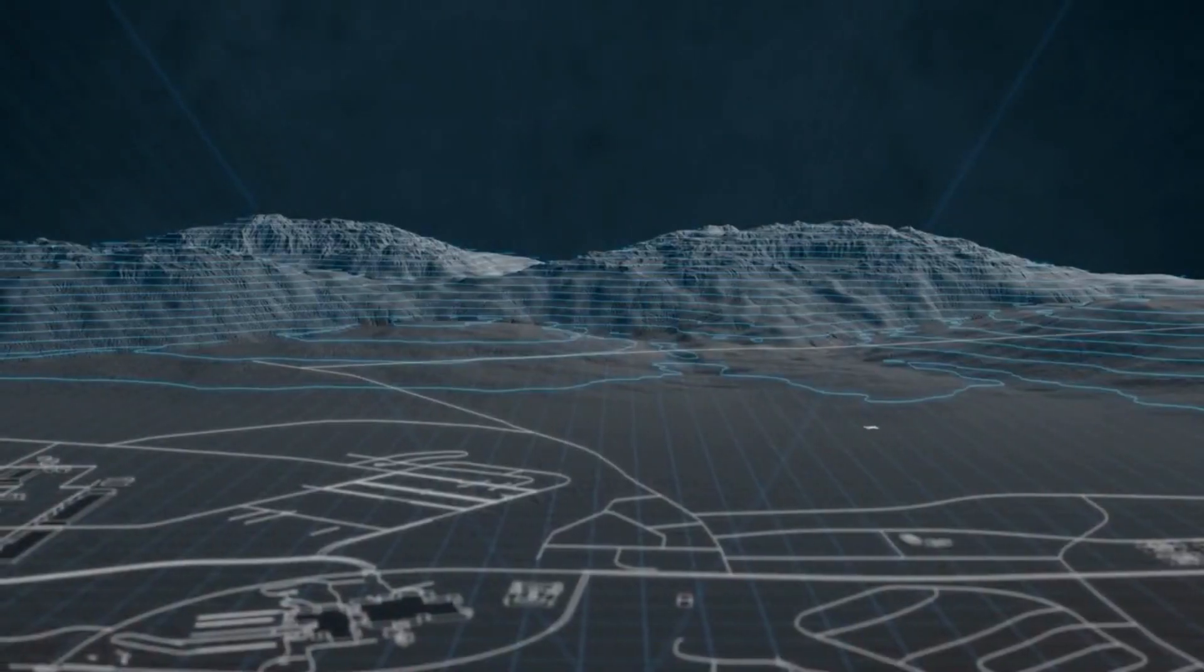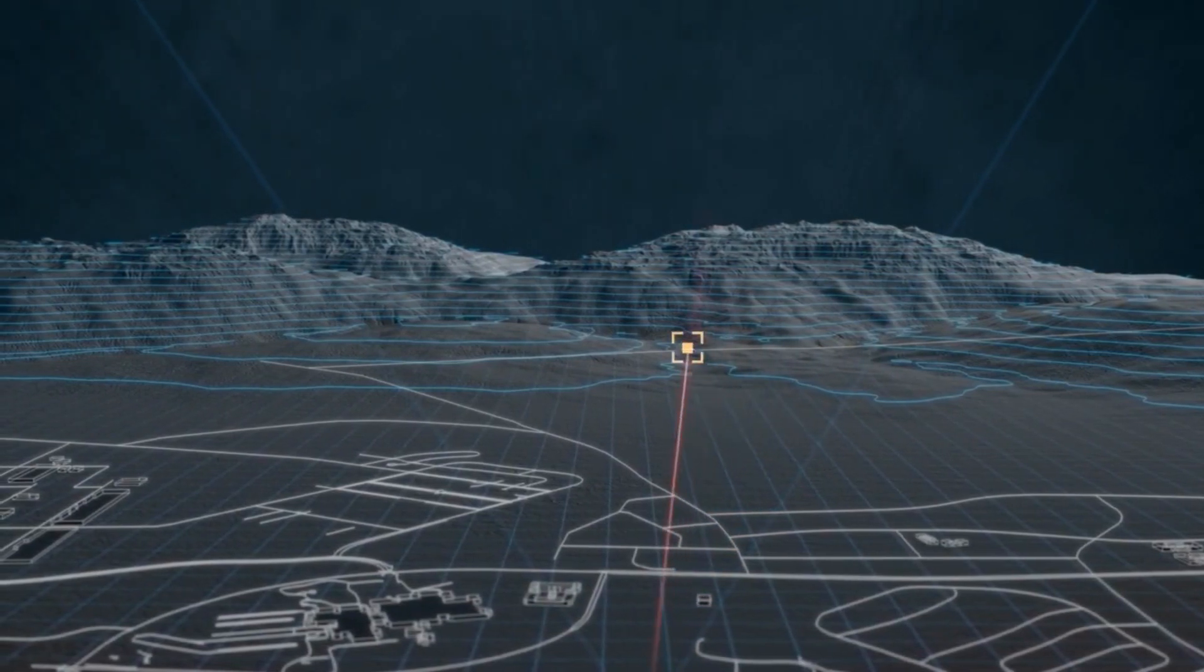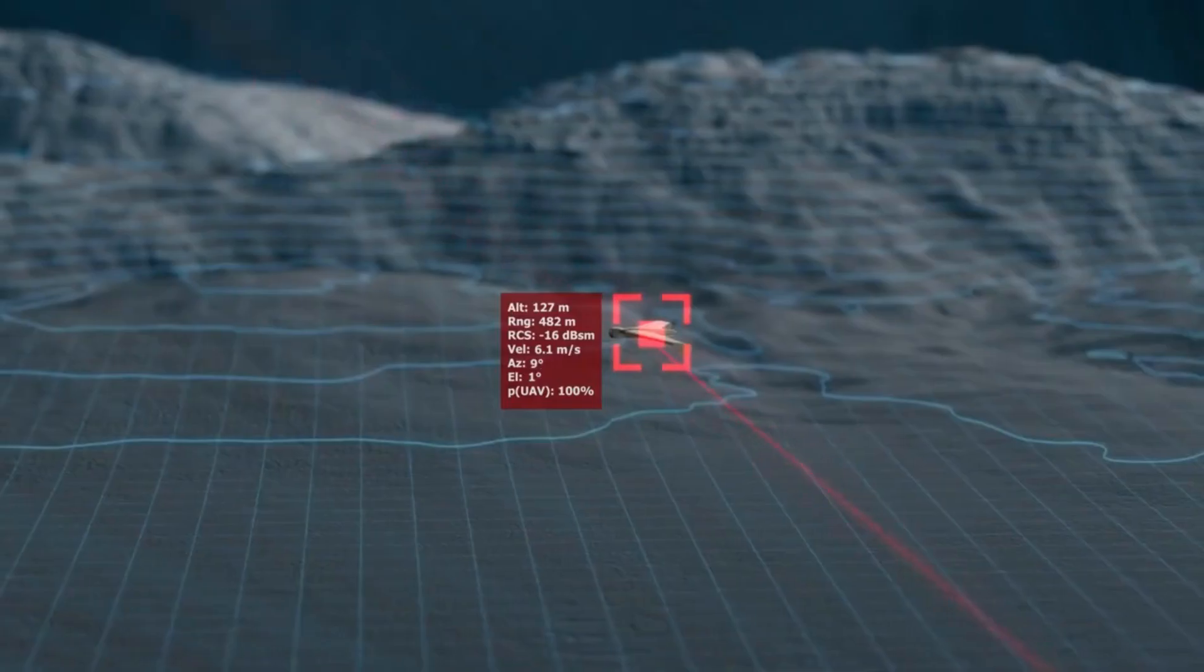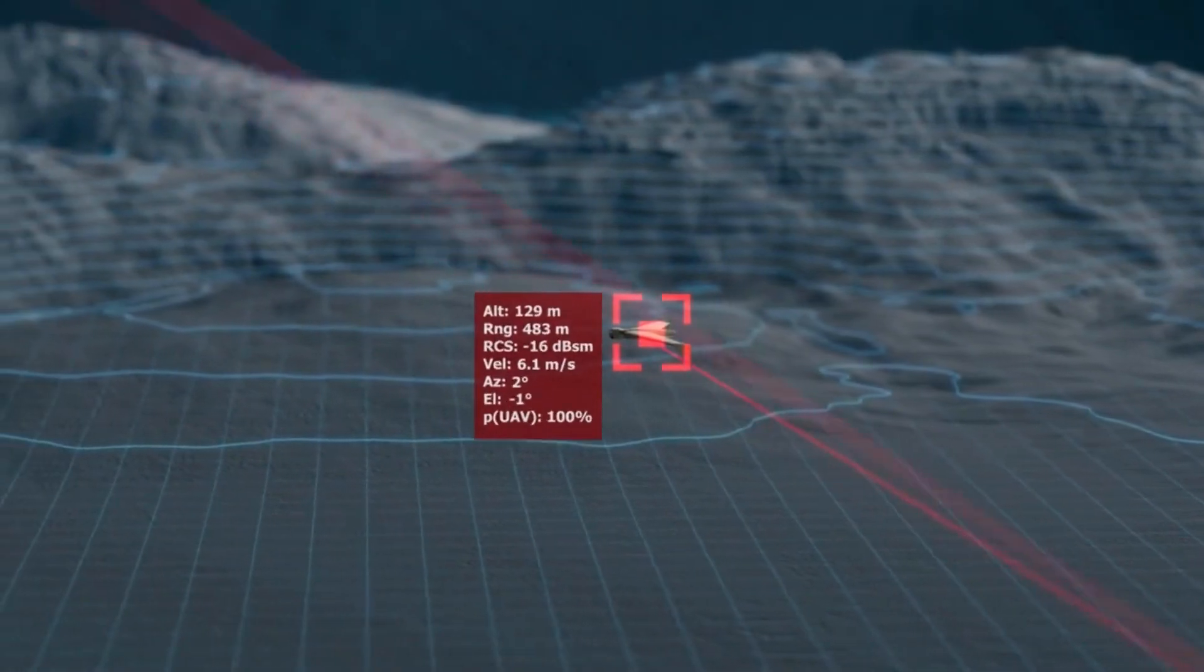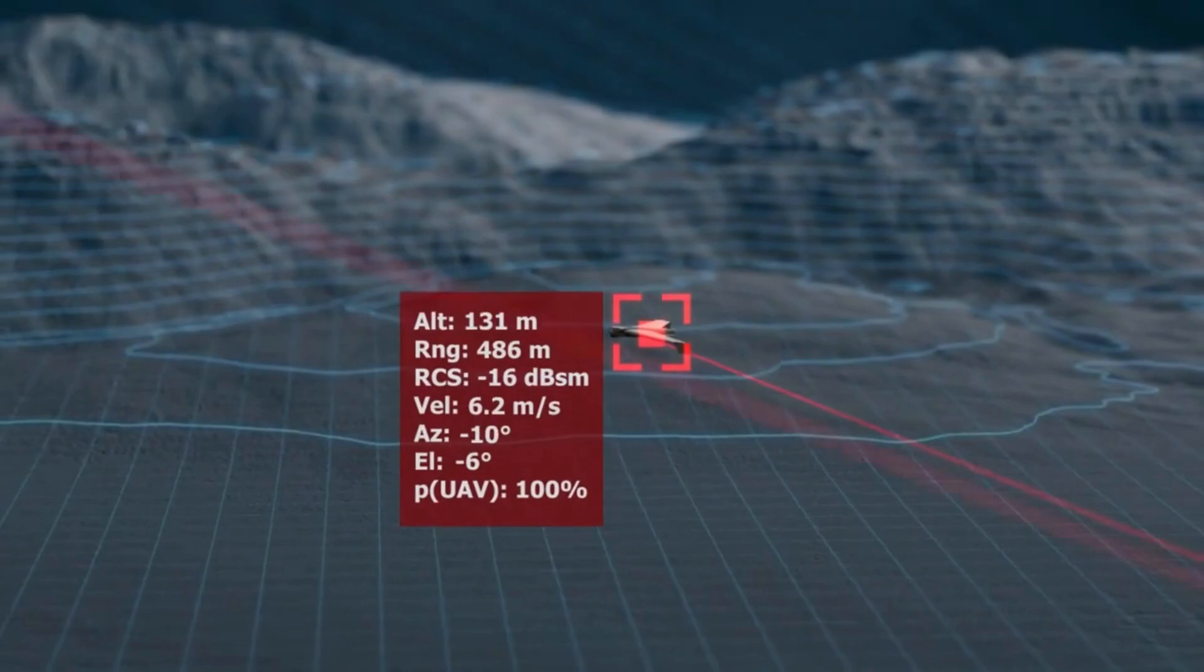After Echoshield's adaptive beam steering technology detects an object and begins to track it, custom classification waveforms precisely pinpoint the threat spatially in 3D and determine its size, posture, and velocity.